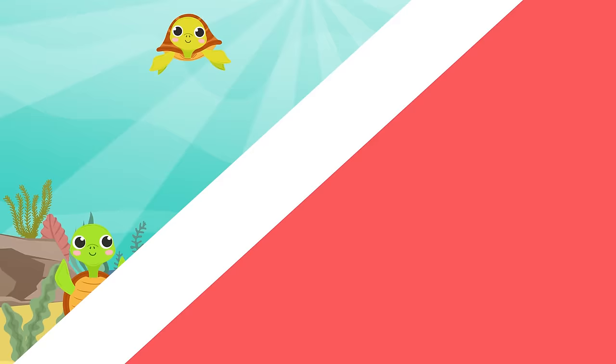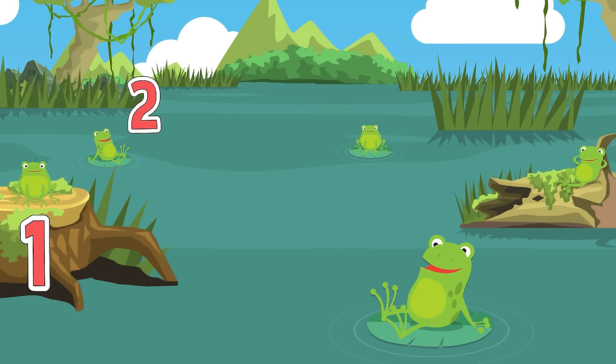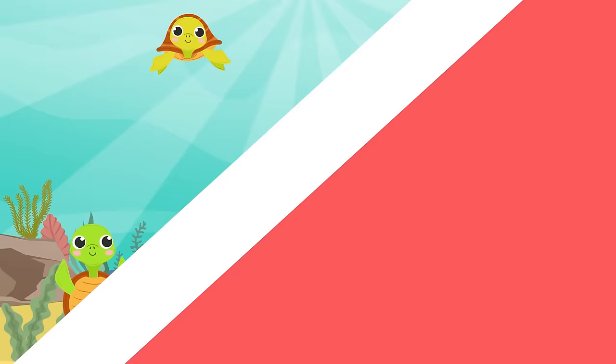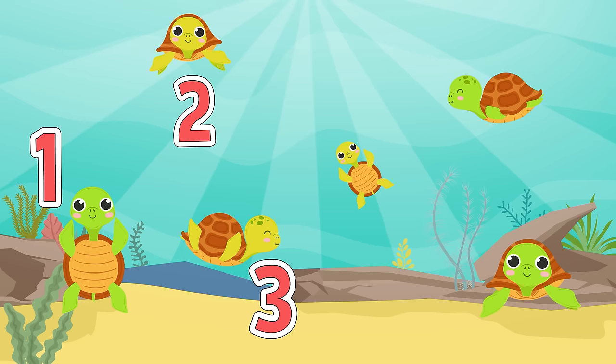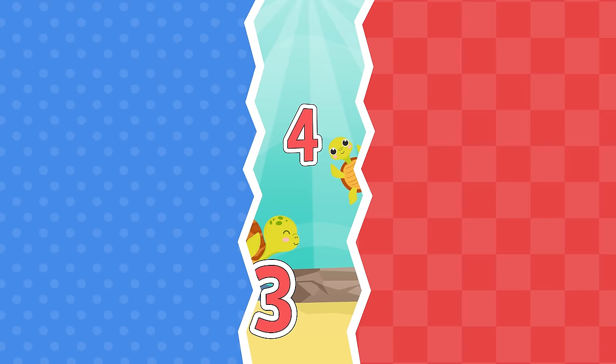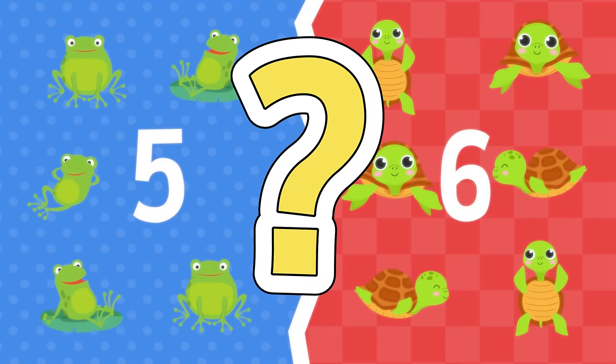Here's a group of frogs hopping by the lake, and here's a group of turtles paddling as they play. Let's count the frogs right now: 1, 2, 3, 4, 5. Let's count the turtles right now: 1, 2, 3, 4, 5, 6. Here are 5 frogs. Here are 6 turtles. Which group has more or less? You answer before me.